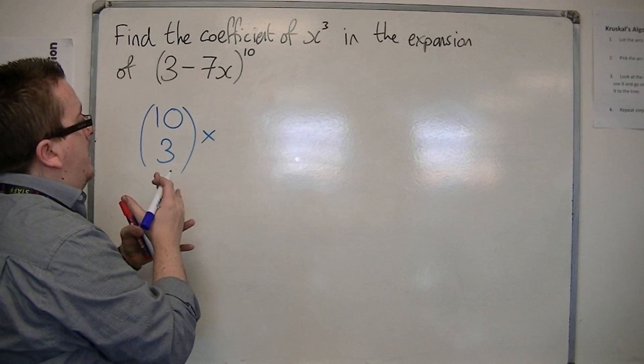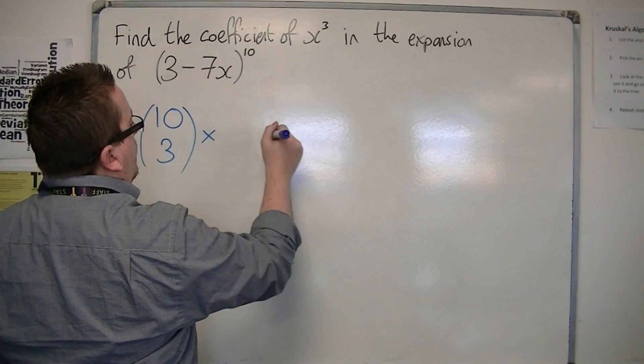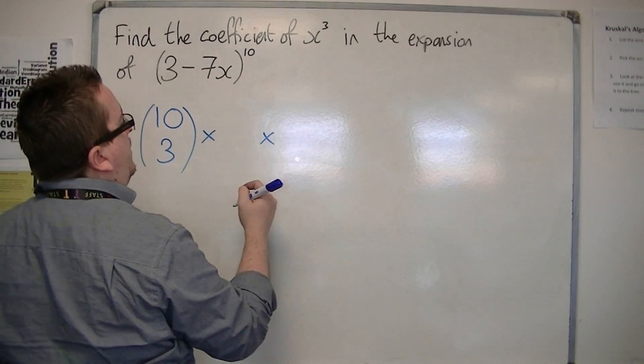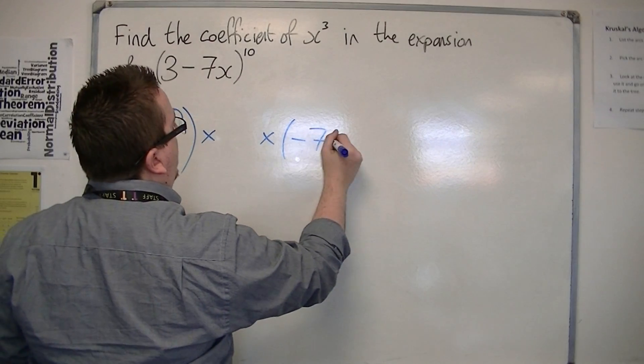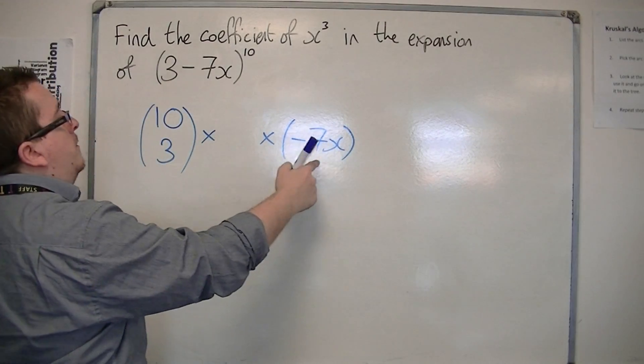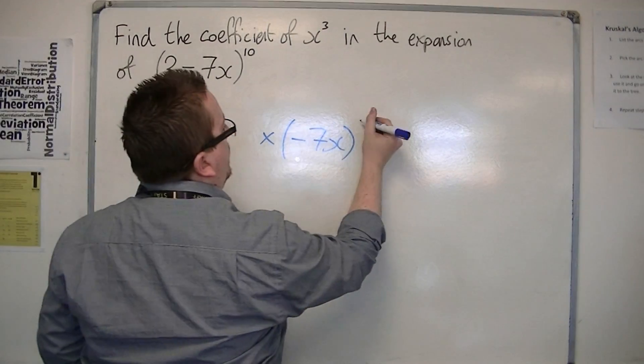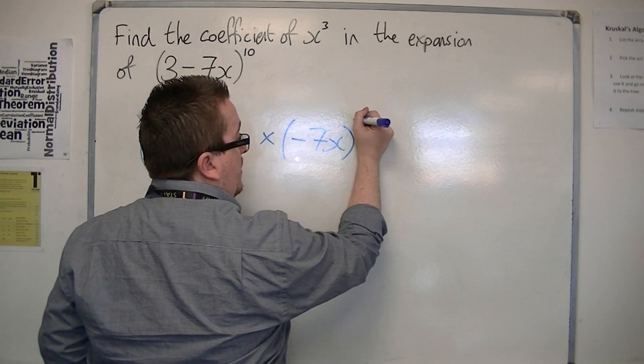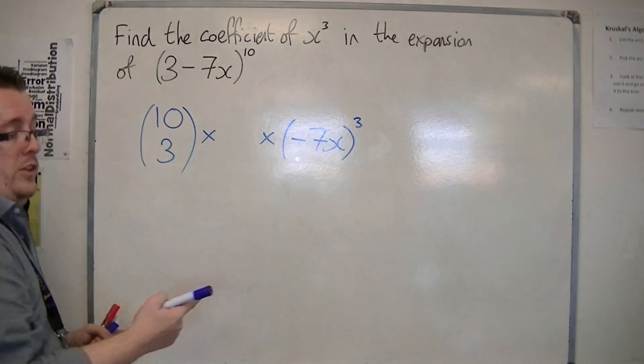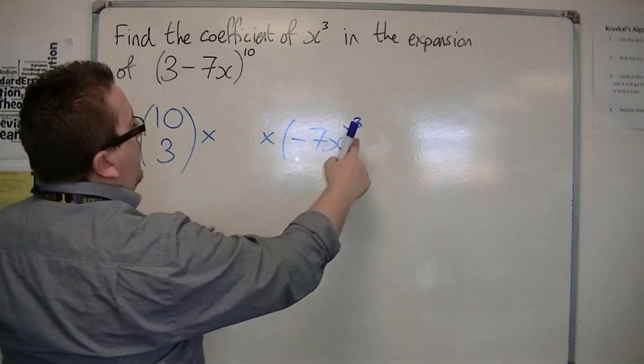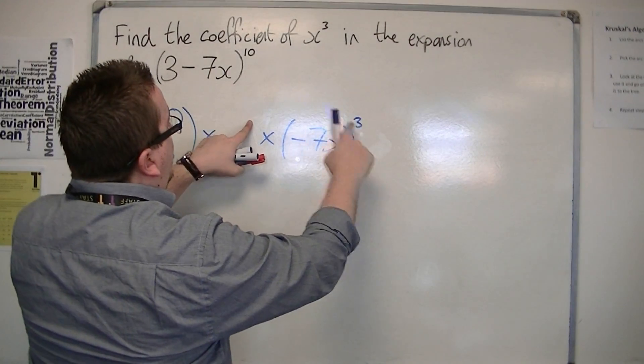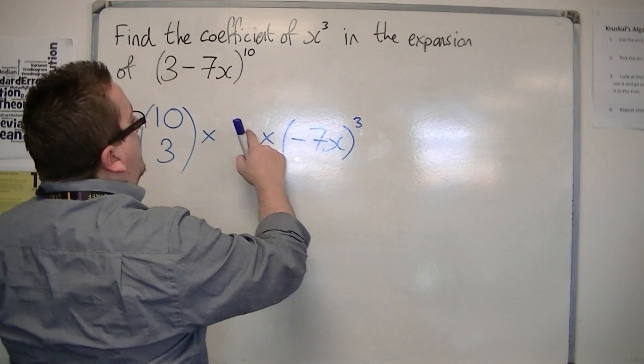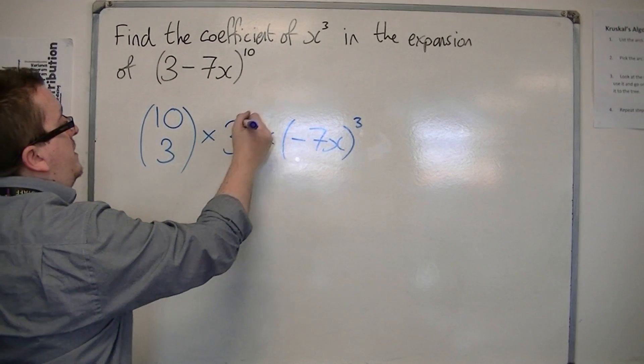Multiplied by, well I've got these two other terms to look for. The minus 7x is going to be cubed because I want the x cubed term. And I know that these two powers must add up to 10 because I know the pattern. So that's 7, so 3 to the 7.